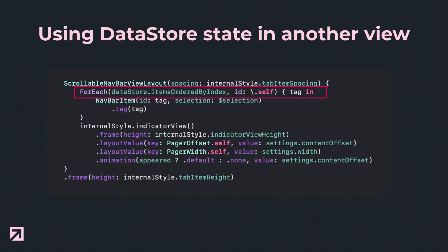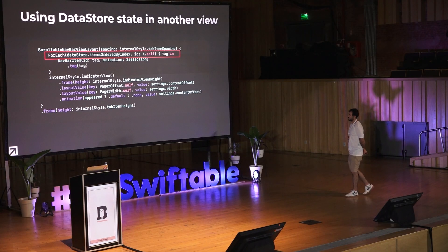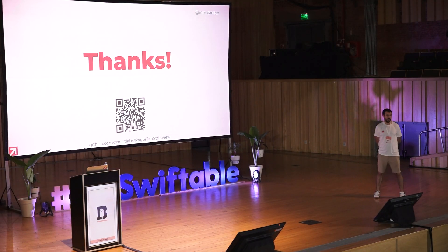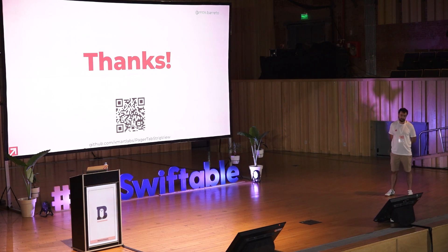Another example of using the shared data is when we want to create the navigation bar tab bar items. Basically, we iterate over the ordered list of tags and use it to build each item. So that's basically all I have to share today. I invite you to check out the code in the GitHub repository. I'm also happy to answer any questions you have.